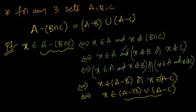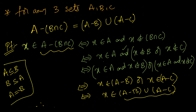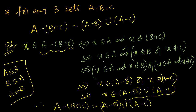X in A but not in B means x belongs to A minus B, and x in A but not in C means x belongs to A minus C. 'Or' means union, so x belongs to (A minus B) union (A minus C). By equality of sets, A minus (B intersection C) = (A minus B) union (A minus C).